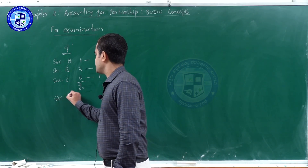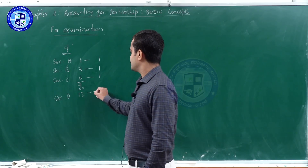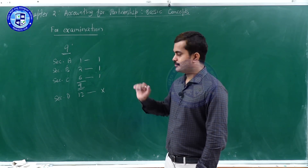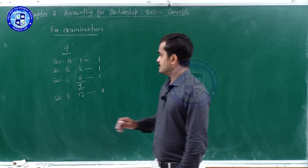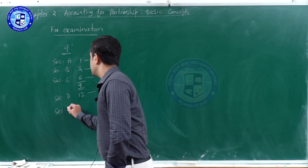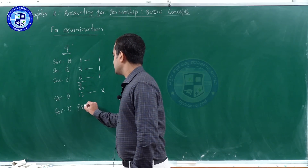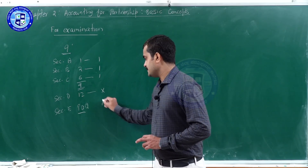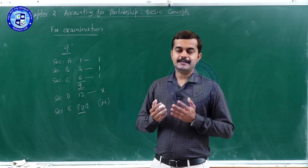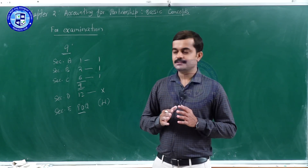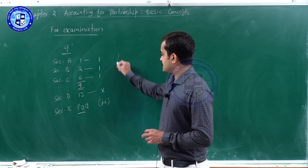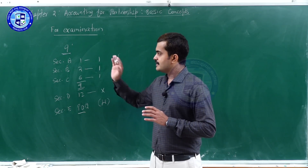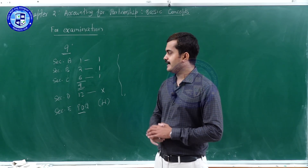Coming to Section D for 12 marks, there are no questions for this chapter. For Section E — practical oriented questions — there are a total of 4 questions from this chapter. So let us look at what different questions will be asked under Section A, Section B, and Section C.